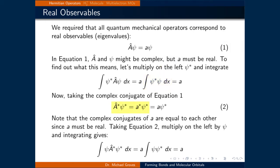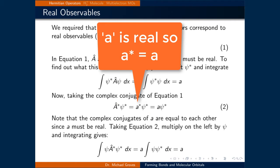Now, taking the complex conjugate of equation 1, we get the complex conjugate of the operator A times psi* being equal to A* times psi*. Since A must be real, its complex conjugate is the same as the original number, so we can write the right-hand side as A times psi*.